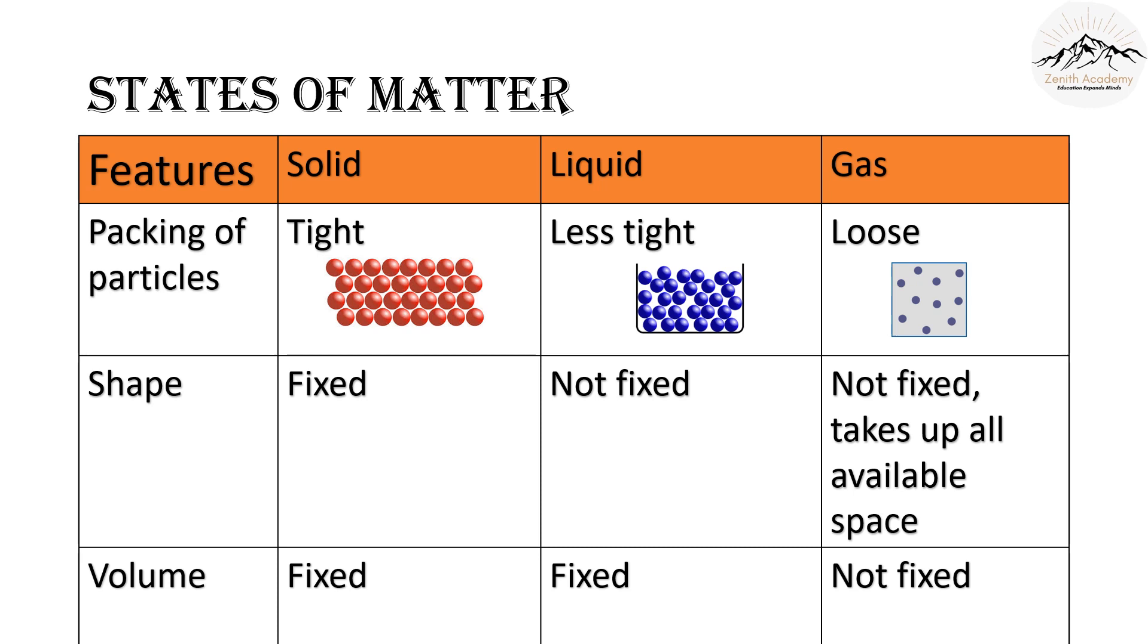The next feature is shape. Solids have a fixed shape unless they are beaten or broken down. Liquids do not have the same shape. Liquids will take the shape of the container. And in case of gas, the shape is not fixed. Gas loves to move around and will therefore move around and occupy all the space that is available. It cannot be easily contained.